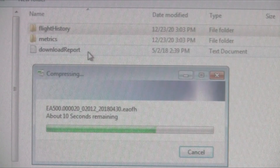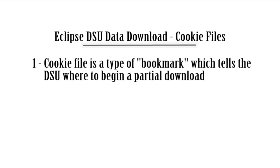Now earlier in the video, we mentioned something about a cookie file. A cookie file is a tool that can be used to save time by telling the aircraft to only download recent data out of the DSU, rather than downloading all of the data. Essentially, the cookie file will tell the aircraft's computer where the last download left off, and so it will only request new data during the next download. This can drastically reduce the time required to complete future downloads and will reduce the size of the resulting files, making those files easier to upload to flightdata.